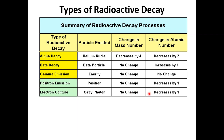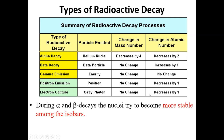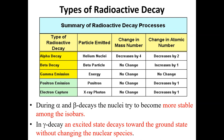One should remember that during alpha and beta decay the nuclei try to become more stable. During gamma decay, excited nuclei decay toward the ground state without changing the nuclear species. In short, during alpha and beta decay the nuclear species change from one type of atom to another, but during gamma decay the atom only moves from excited state to ground state — the nuclear species does not change.